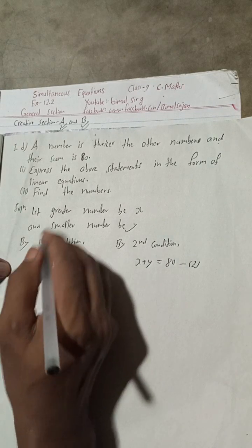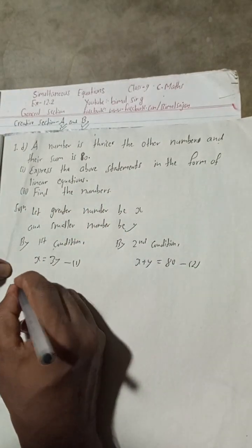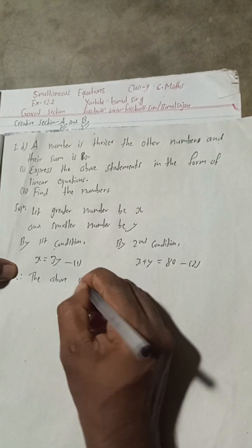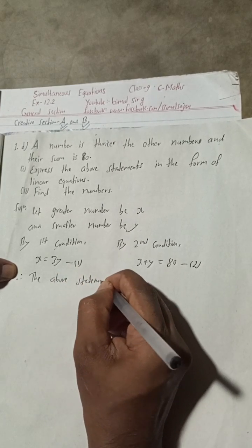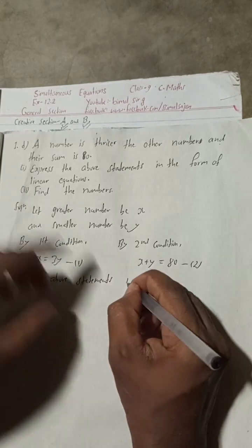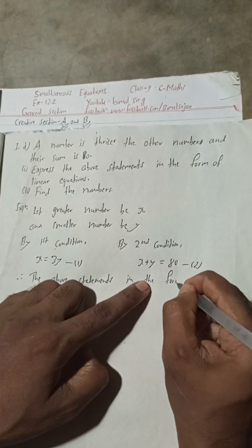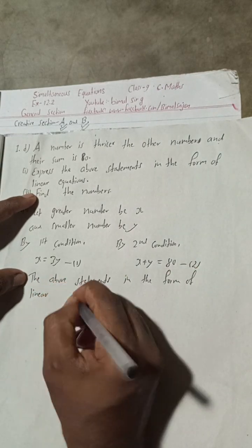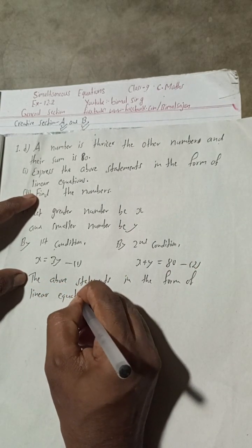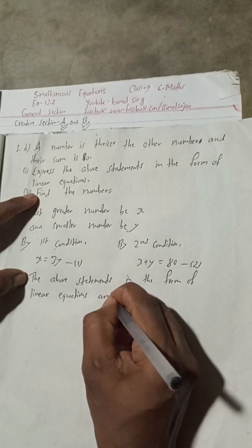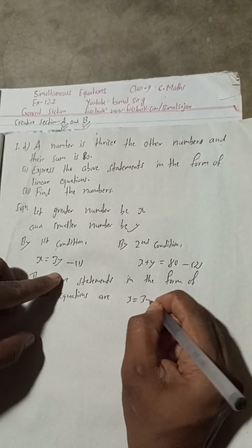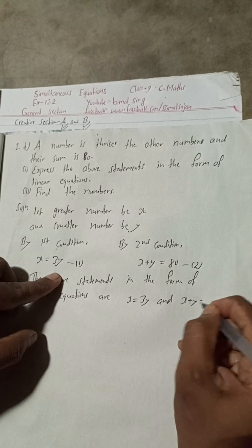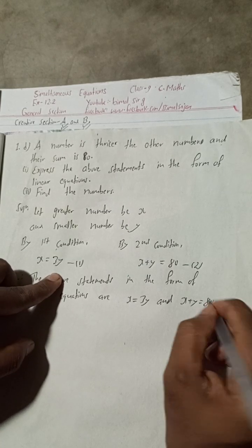Now we can write here the above statements. Therefore, the above statements in the form of linear equations are X equals 3Y and X plus Y equals 80.